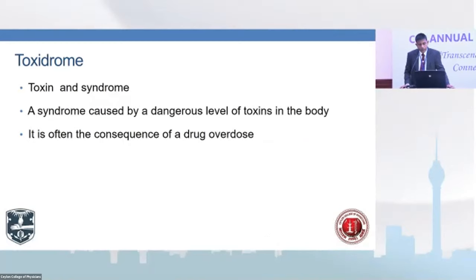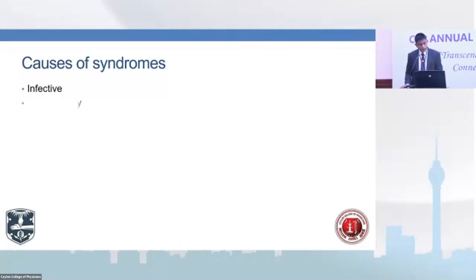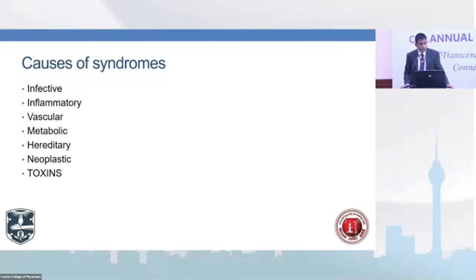It's often the consequence of a drug overdose, but in the Sri Lankan scenario it could be a pesticide, a herbicide, or a plant poison. Whatever it is, if the constellation of signs and symptoms are due to a toxin, you call it a Toxidrome. Our standard teaching tells us the causes of any syndrome — infective, inflammatory, vascular, metabolic, hereditary, neoplastic, and toxin. Whenever you encounter a patient, think about whether these signs and symptoms are due to a toxin — in that case, it is called a Toxidrome.